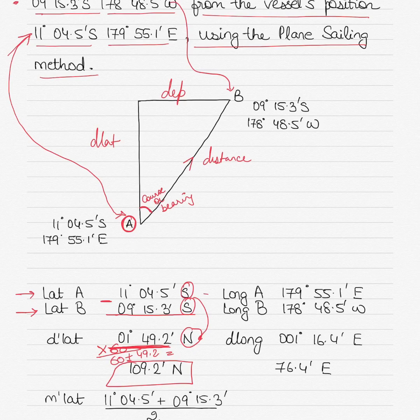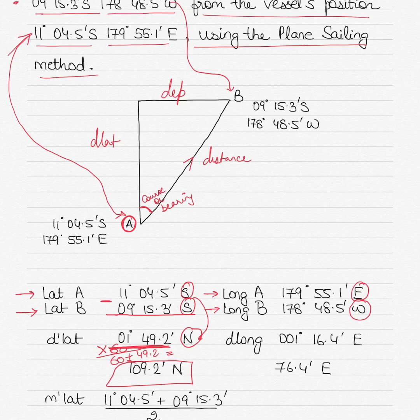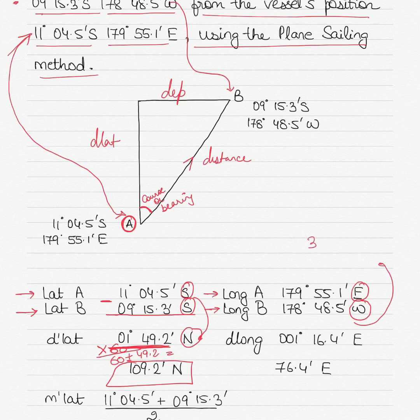Similarly, I have the longitude of A and longitude of B. The same rule applies — different names add, same names subtract. Because there are different names here, I will add the two. But if the addition is more than 180, then you subtract it from 360, because D long can never be more than 180. Adding 179°55.1' E plus 178°48.5' W gives 358°43.6'.